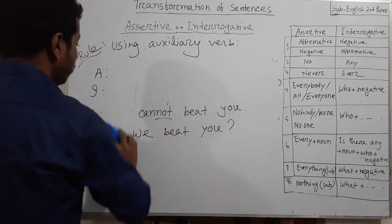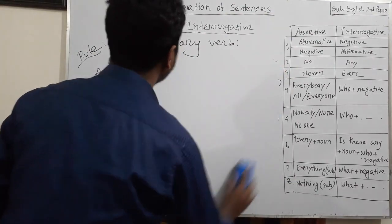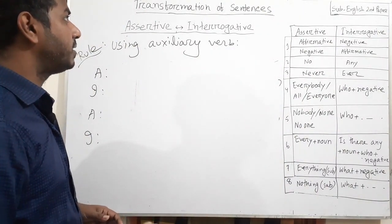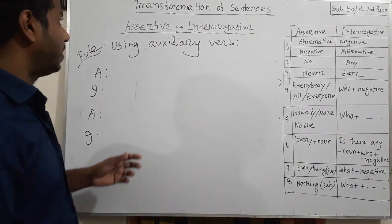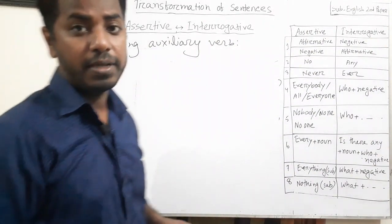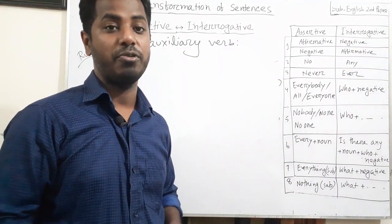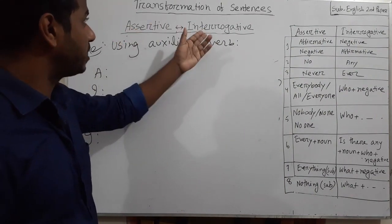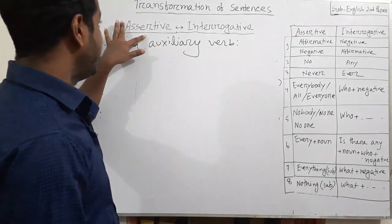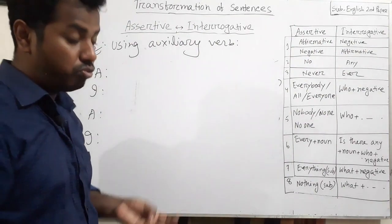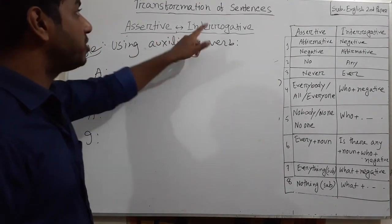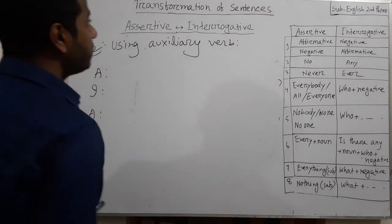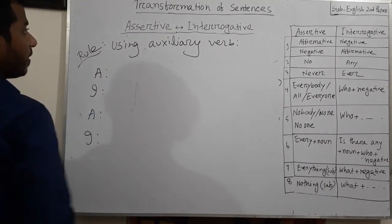If there is no auxiliary verb in an assertive sentence, how do we make it interrogative? If there is no auxiliary verb, we have to bring do, does, or did according to tense. In present indefinite tense, there will be do or does, and in past indefinite tense, there will be did.